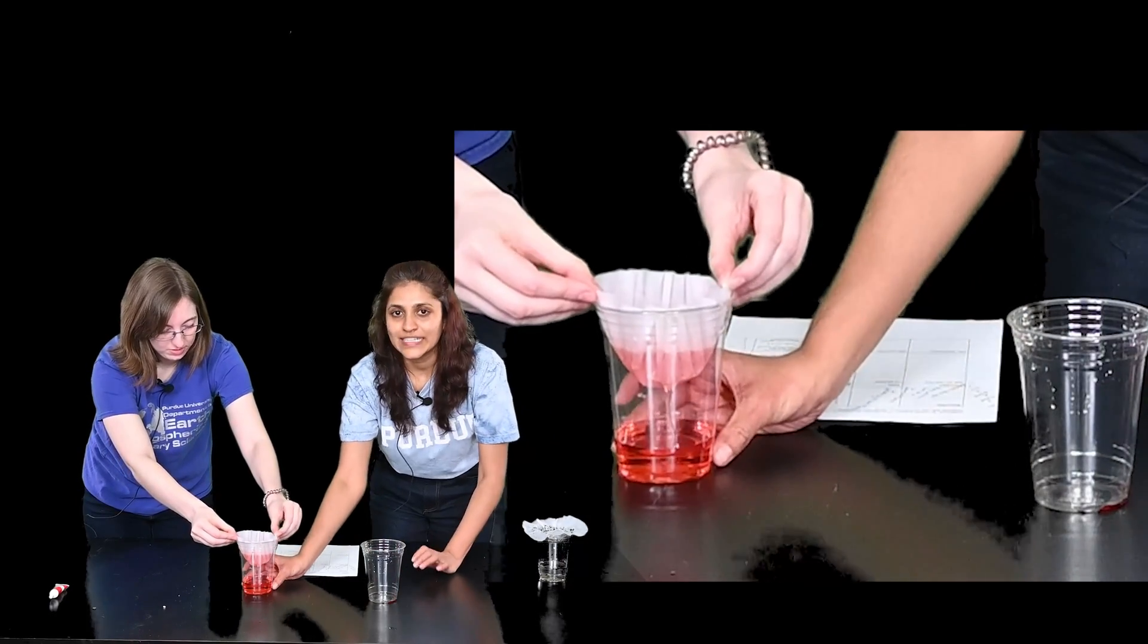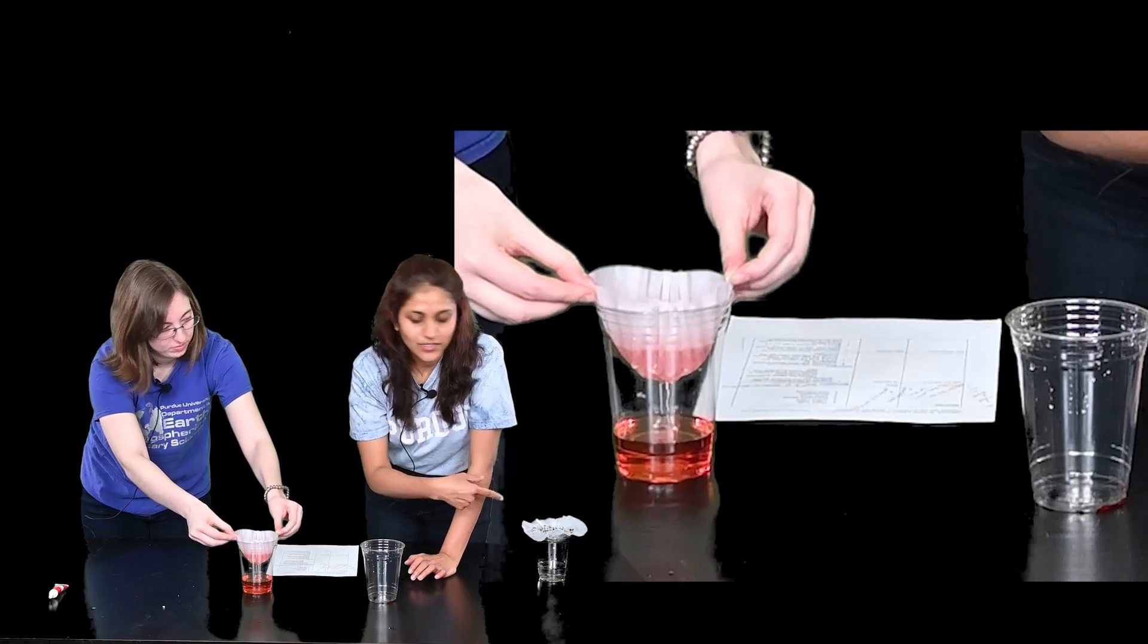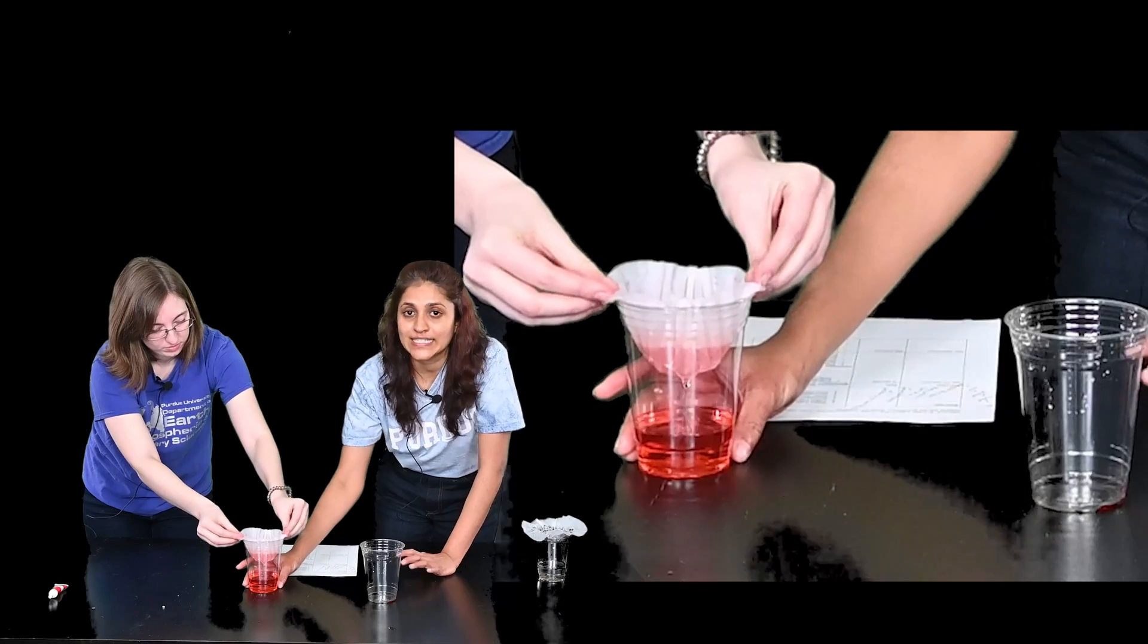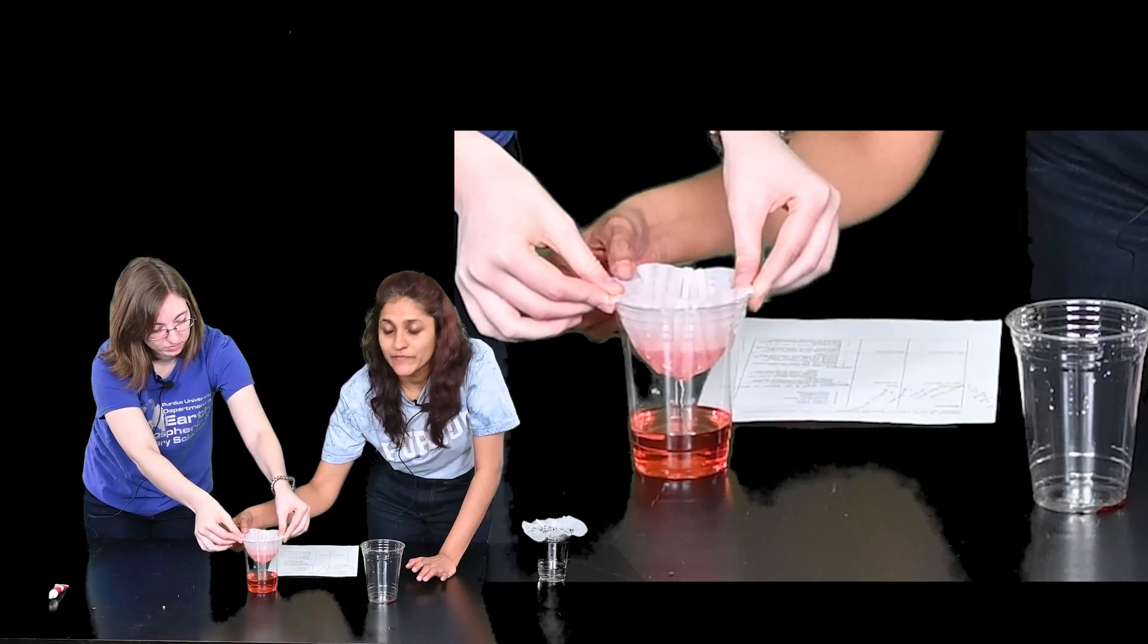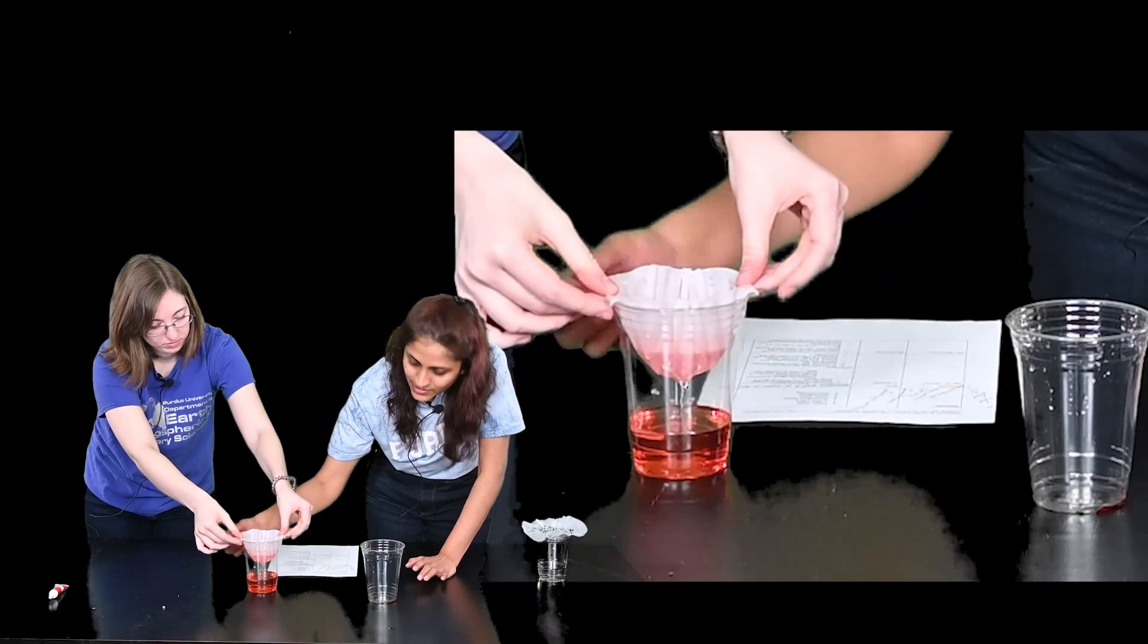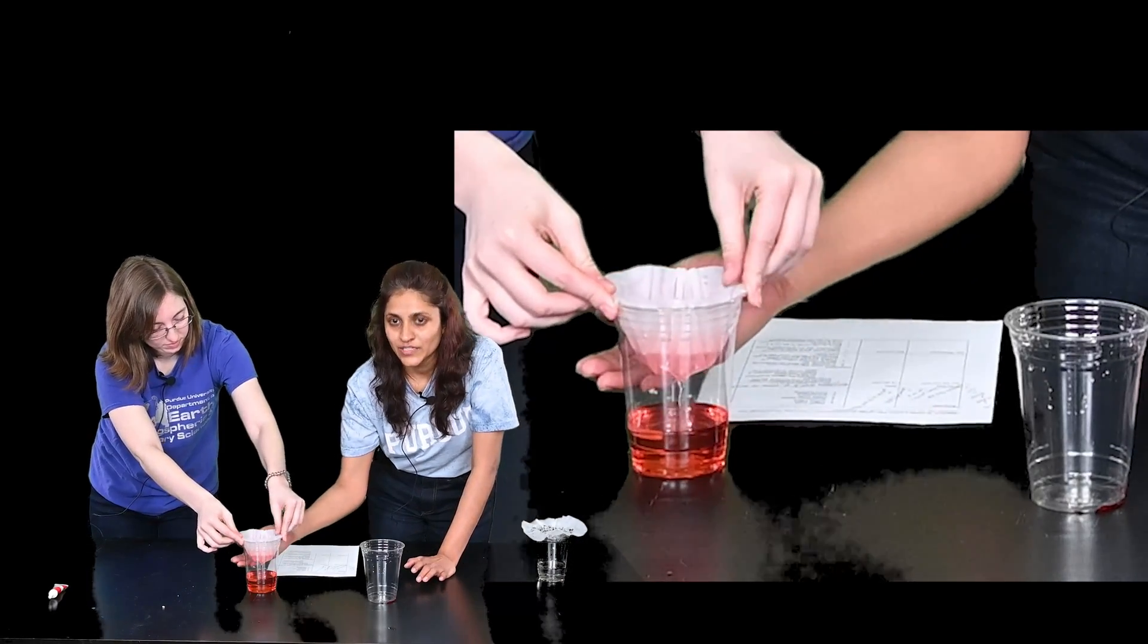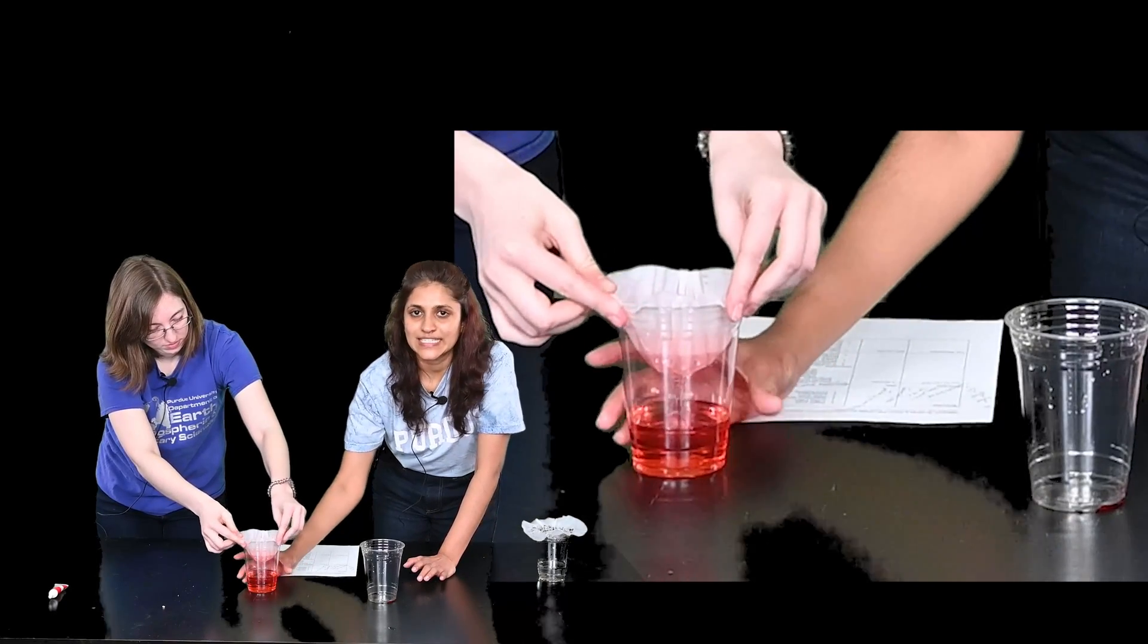So as you can see earlier when we used the same filter to filter the bigger chunky parts the fresh water came out almost as clear as it was before. But now when we're using the same kind of filter you can see that the coloring is not actually being filtered out. So the coloring or the pollutant is still in the water.